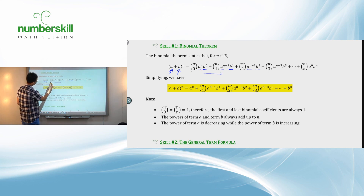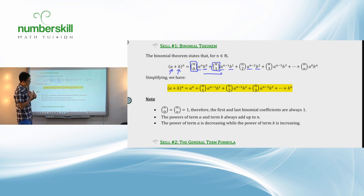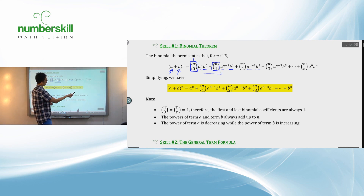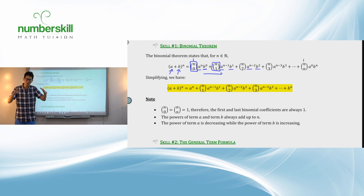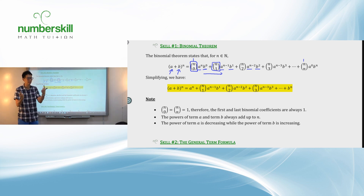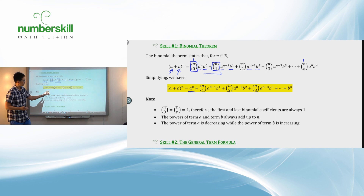We have the other component called the binomial coefficient: NC0, NC1, NC2, NC3, and so on. The only things you want to know are that NC0 is one and NCN is one. For those of you who attended the first lecture on binomial theorem, we talked about Pascal's Triangle, which always starts with one and ends with one. So the first term of the binomial theorem is simply A with the full power, and the last term is just B with the full power.